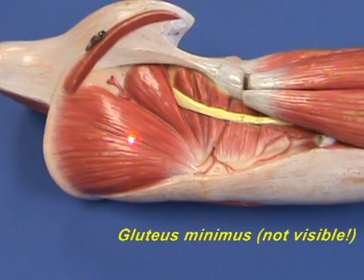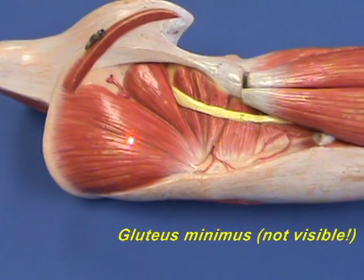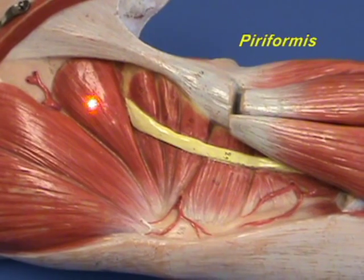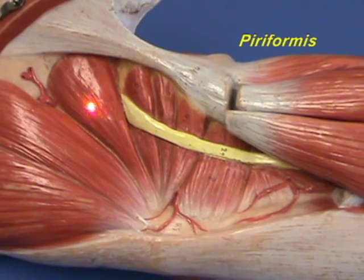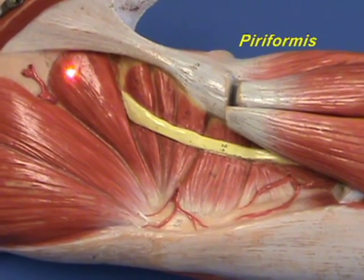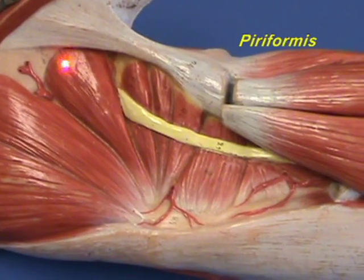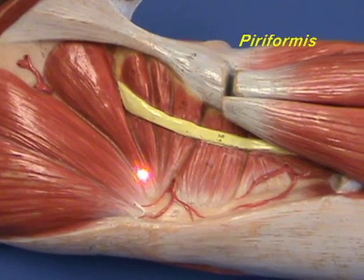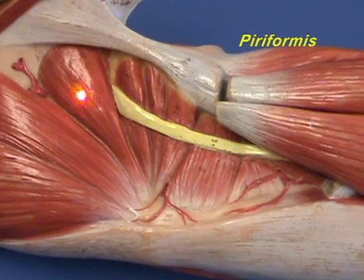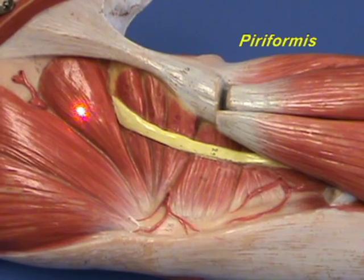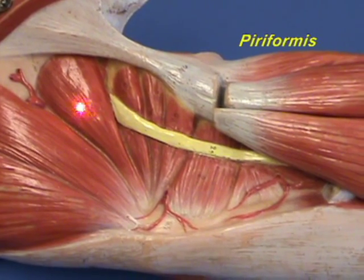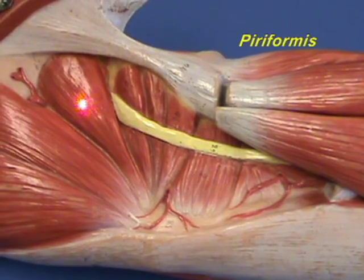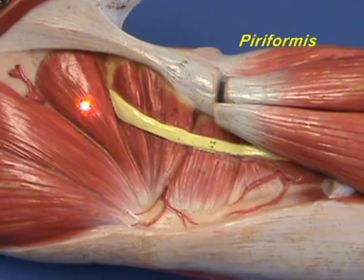The action of the gluteus minimus is to abduct the femur at the hip joint. The piriformis muscle has an origin on the anterior surface of the sacrum and inserts on the greater trochanter of the femur. This muscle laterally rotates the extended femur at the hip joint and abducts the flexed femur at the hip joint.